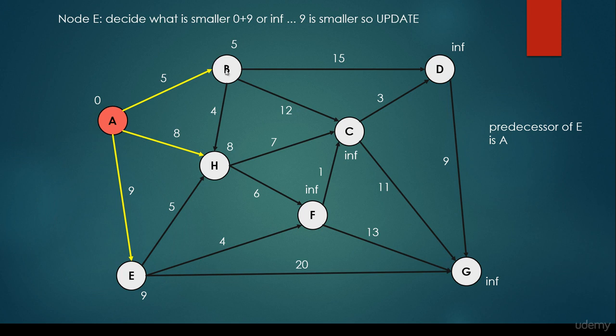For the Bellman-Ford algorithm we are going to calculate for all the vertices at the same time, and we are going to make as many iterations as the number of vertices in the given graph. That's why we know that if we make another iteration — n plus 1, where n is the number of vertices — and the overall shortest path decreases, we know that there's a negative cycle.